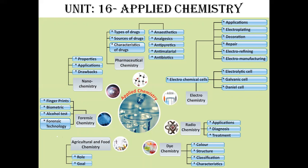The next one is Pharmaceutical Chemistry. Pharmaceutical Chemistry contains the topic of Drugs — what is meant by Drugs, what are the characteristics of Drugs, sources of Drugs from animals and plants, and types of Drugs. The types include Anaesthesia, Analgesia, Antipyretic, Antimalarial, and Antibiotics.